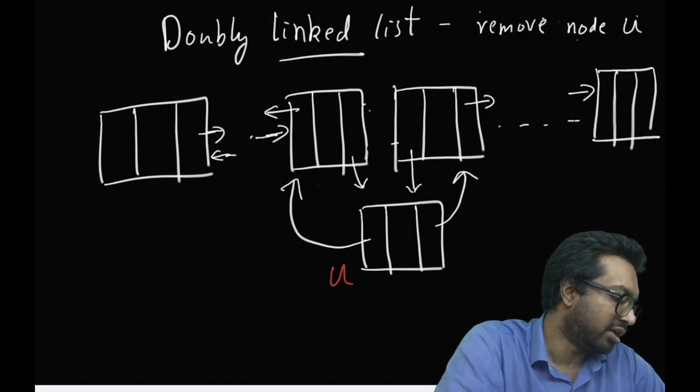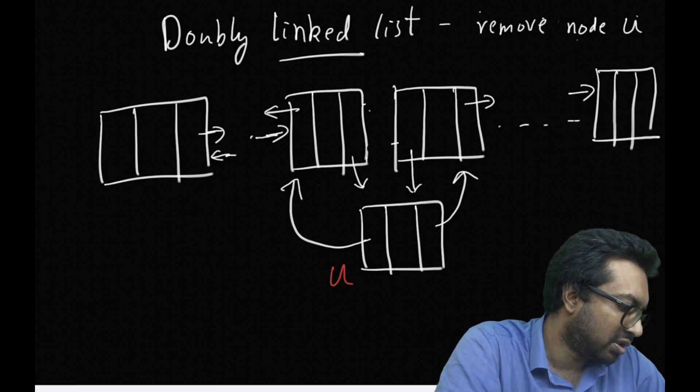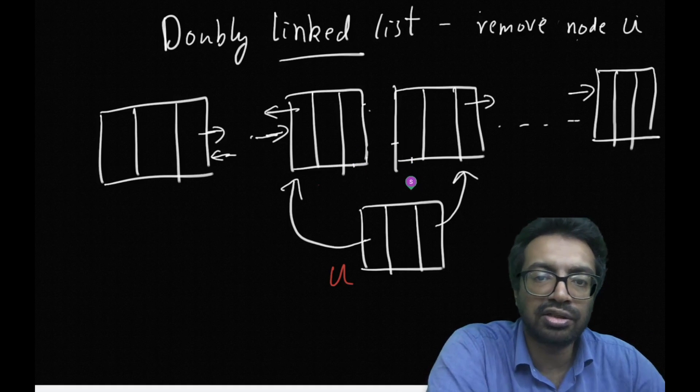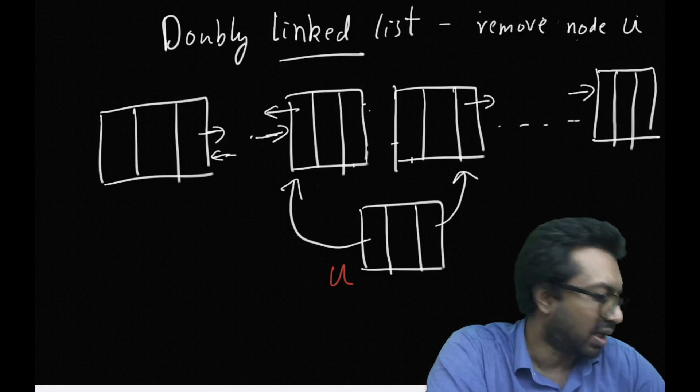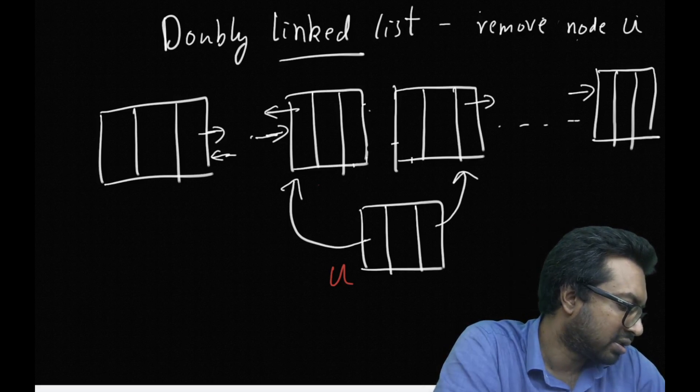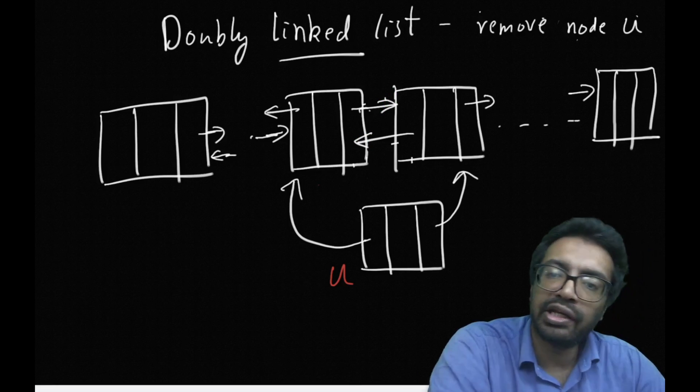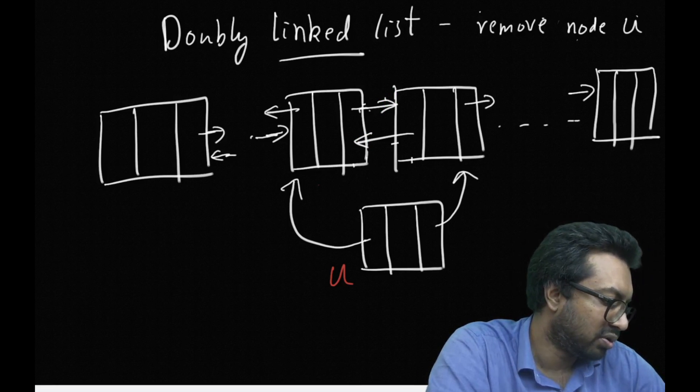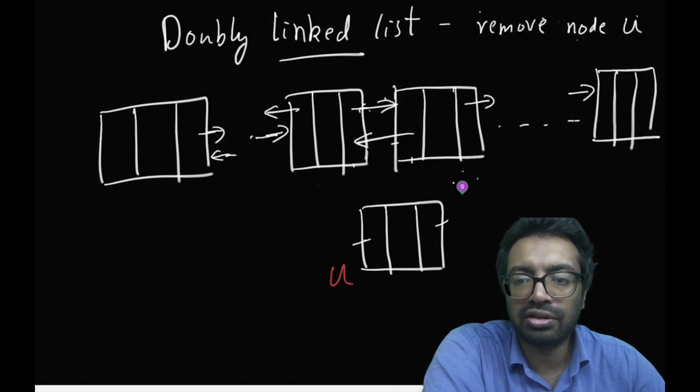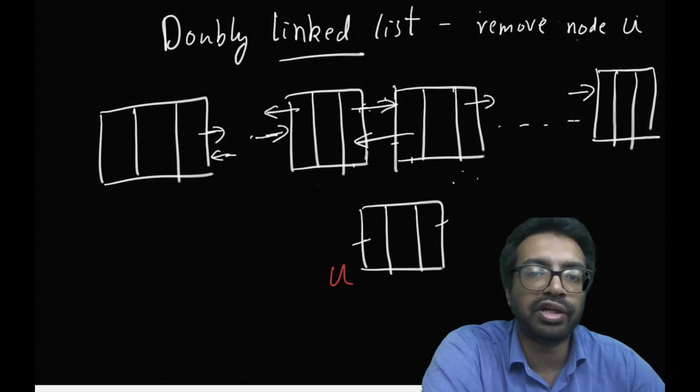Now what do I have to do? I remove all the next and prev pointers of these two nodes and then I appropriately mark them. Finally I will have to remove this node U by doing a delete operation. Memory allocated to this node will be freed.